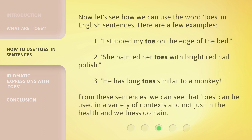Now let's see how we can use the word "toes" in English sentences. Here are a few examples. One: I stubbed my toe on the edge of the bed. Two: She painted her toes with bright red nail polish. Three: He has long toes similar to a monkey. From these sentences, we can see that "toes" can be used in a variety of contexts and not just in the health and wellness domain.